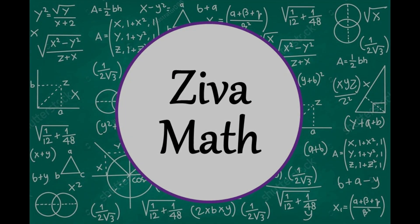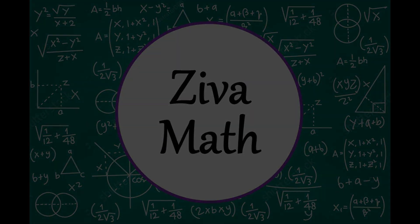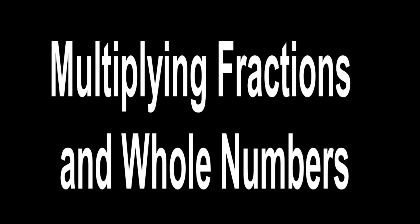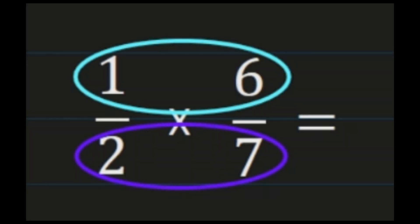Welcome to another Ziva Math video. In this video, we'll learn about multiplying fractions and whole numbers. Remember, when we multiply fractions, we're multiplying the numerator by the numerator and the denominator by the denominator. So when you multiply a fraction by a whole number, you will need to change the whole number into a fraction so you can multiply numerators and multiply denominators.